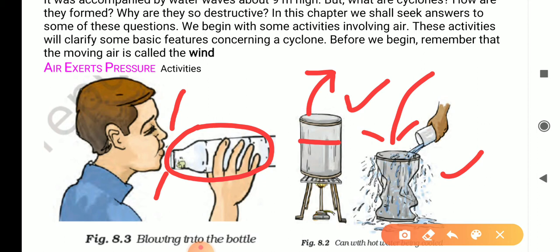The pressure of the air on the outside is more than the inside. So, the tin can get crumbled. This shows that air exerts pressure.